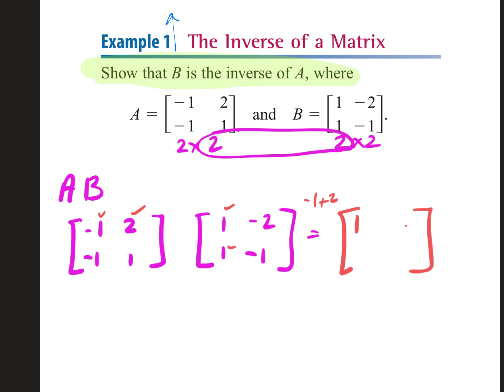Now bottom left: second row, first column. Negative one times one is negative one, and one times one is plus one — negative one plus one is zero. Bottom right: second row, second column. Negative one times negative two is two, and one times negative one is minus one — two minus one is one. Did we multiply these two together and get the identity matrix? Yes — one, zero, zero, one.